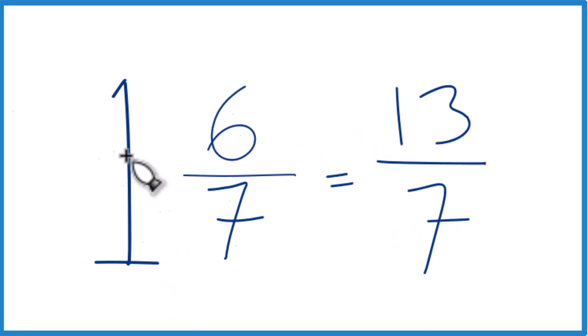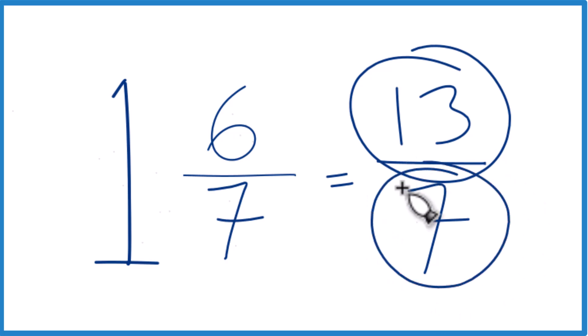Let's do that one more time. 1 times 7 is 7, 7 plus 6, that's the numerator, 13. Bring the denominator across, and we're done.